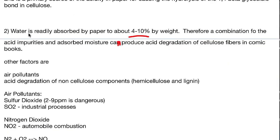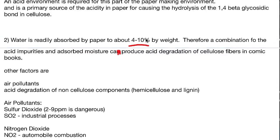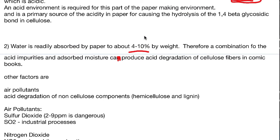Water is readily absorbed by paper — about four to ten percent by weight — so there's plenty of water to help these reactions happen. If you keep your paper drier, this will happen slower. A combination of acid impurities and absorbed moisture can produce acid degradation in cellulose fibers and comic books.